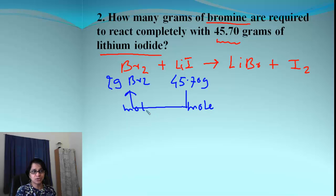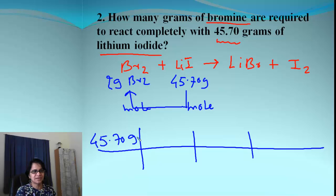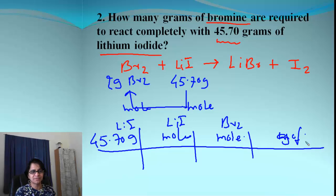Remember again, we need to go to the bridge and bridge always needs to go to moles. So when we put that all in this format, we have 45.70 grams to moles of lithium iodide. It's always important to write down which chemical you are working with. So it will be easier for you to find out the molar mass of that compound. So it's moles of now. Now we go from bridge moles to lithium iodide to moles of bromine.